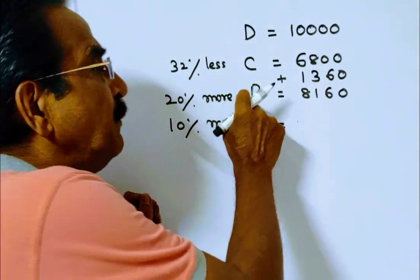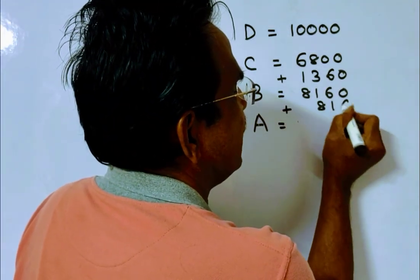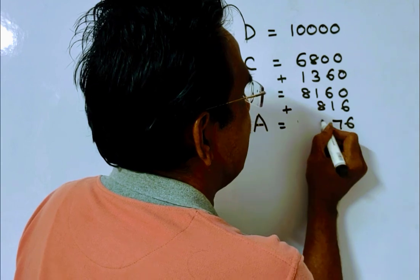A obtained 10 percent more than B. 10 percent of 8,160 means 816. So 8,976.